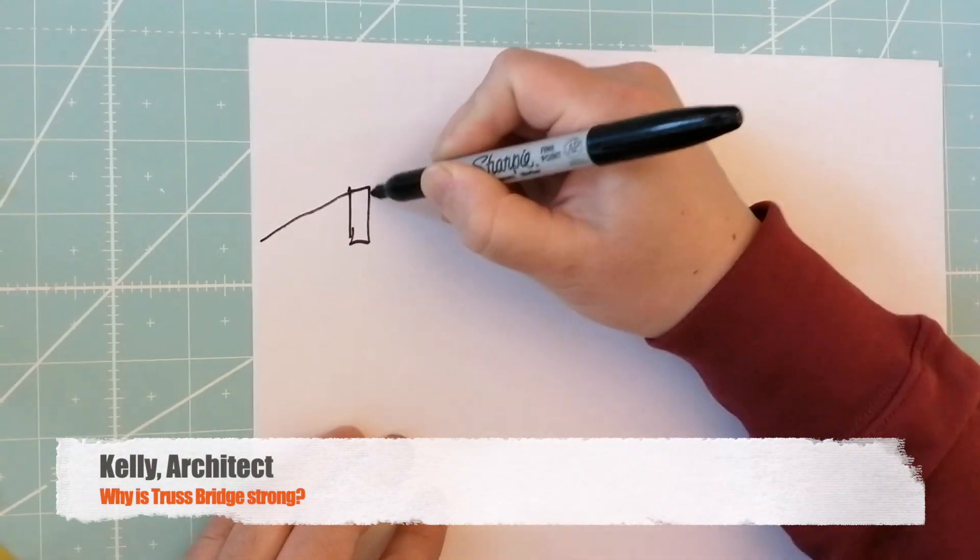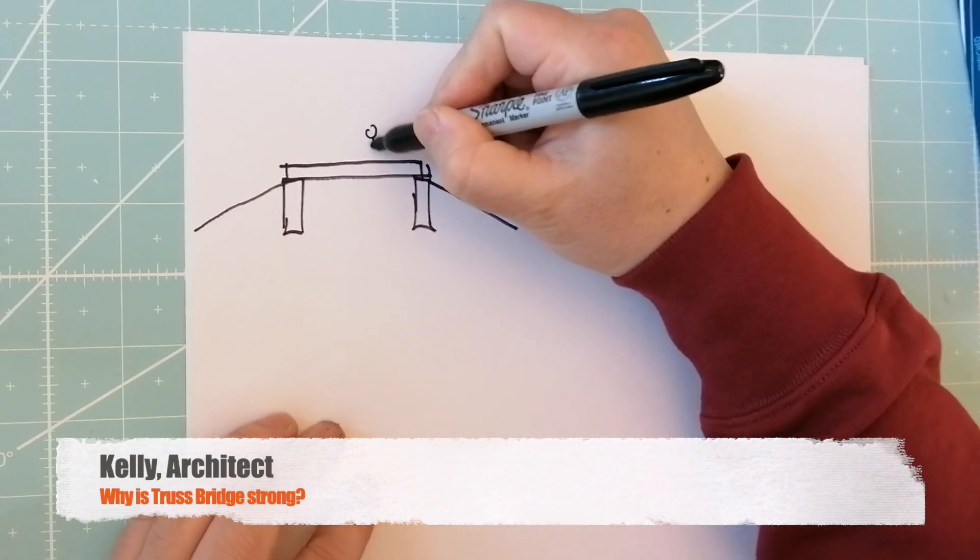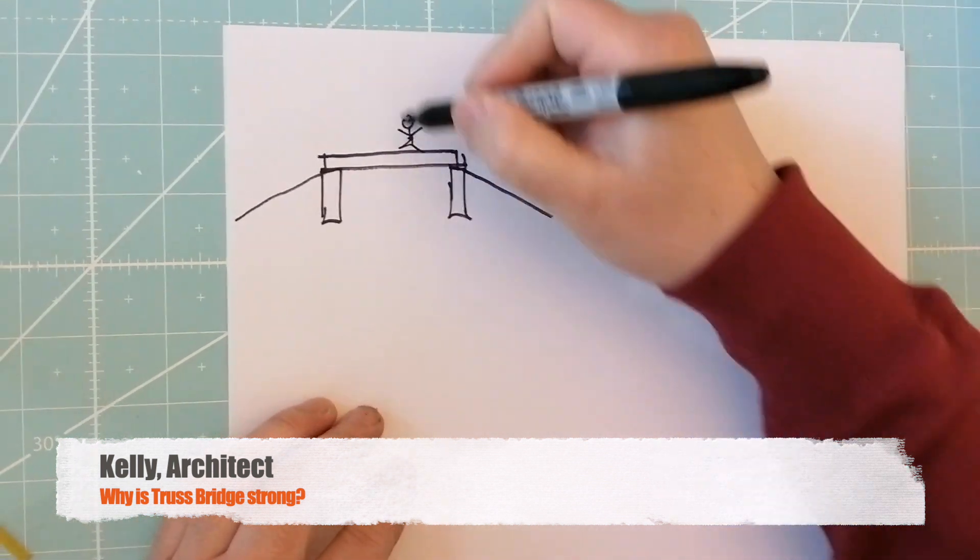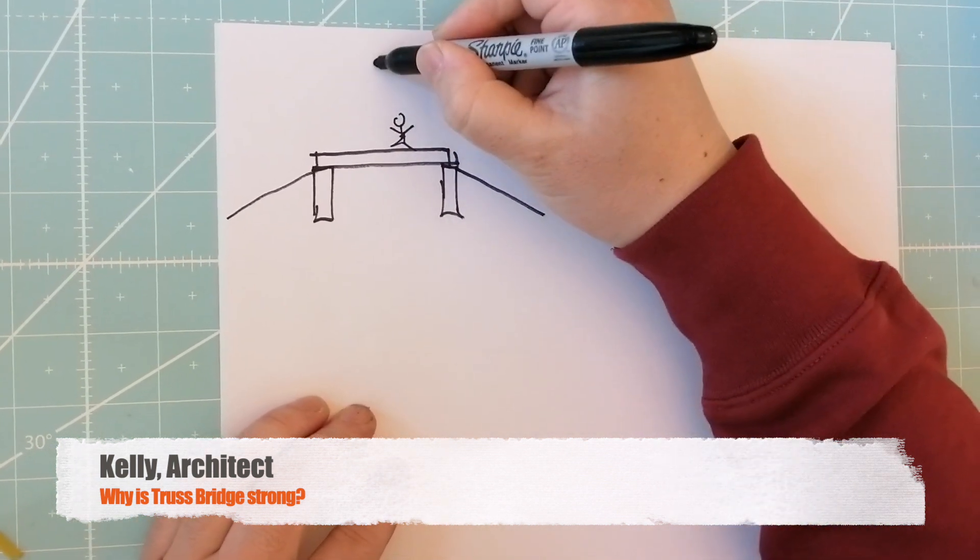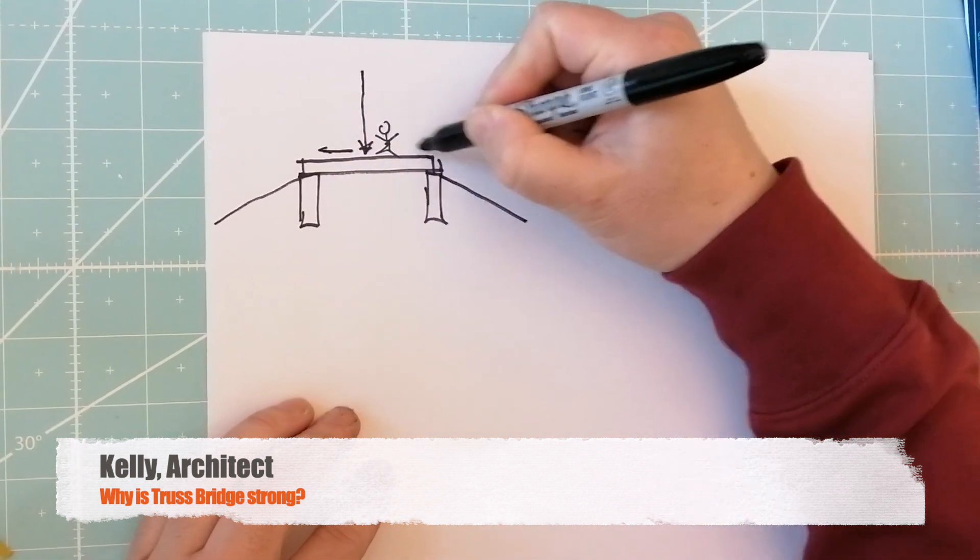So this is a roadway, this is a bridge. As a person on the bridge, the way a beam works is that all the forces translate.